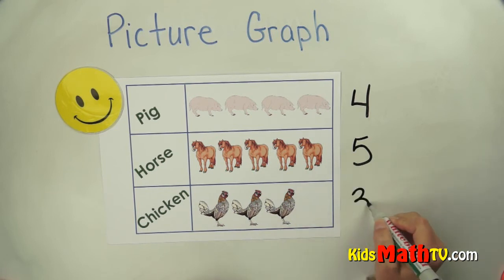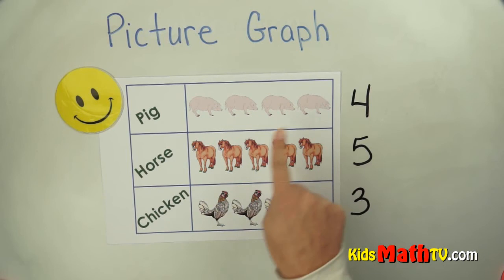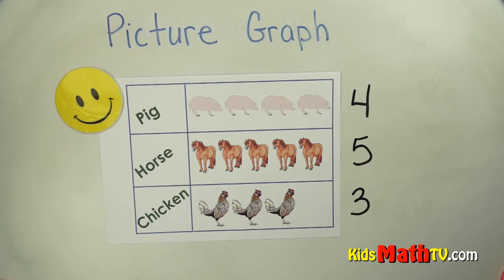One, two, three. Three chickens. That was the fewest number of animals that she saw, three chickens. So all I did was count the number of animals for each part of the graph. And that's the end of our lesson on a picture graph.